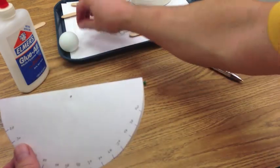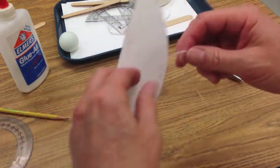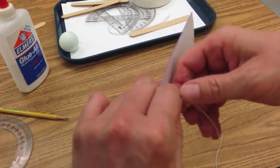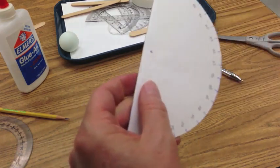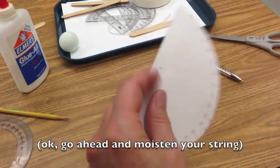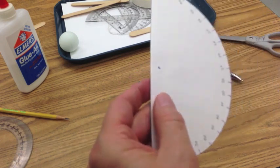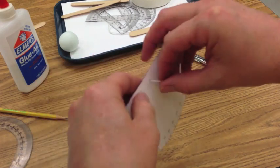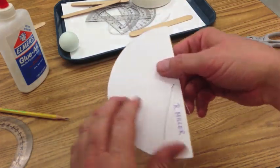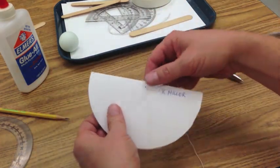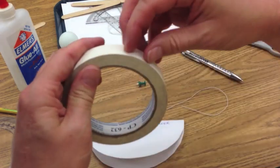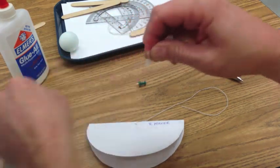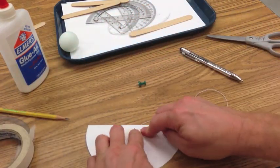Then, what you're going to do is you're going to take the string, slide the string through the hole. Pull it through. And put a piece of tape on it. Like that.